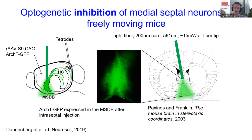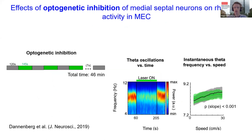To test this, we optogenetically inactivated neurons in the medial septum by expressing the inhibitory opsin archaerhodopsin, a light-activated inhibitory proton pump, and simultaneously recorded LFP signals and speed cells in the medial entorhinal cortex. These experiments were performed in freely foraging mice during alternating epochs of baseline and optogenetic inhibition of medial septum neurons. We demonstrated that optogenetic inhibition of medial septum neurons largely reduced theta oscillations in the entorhinal cortex.